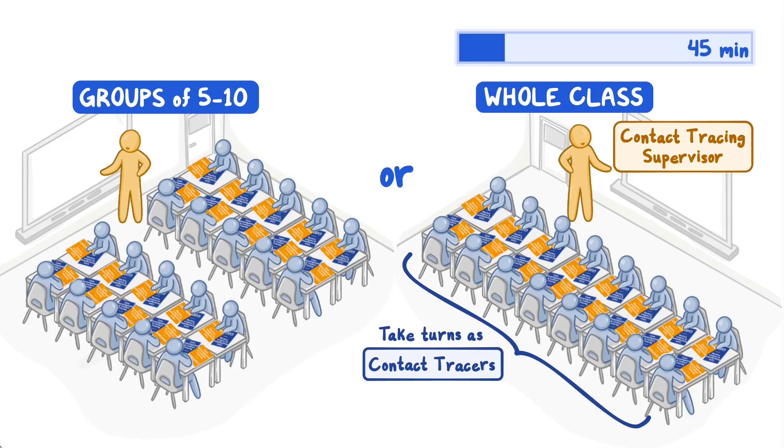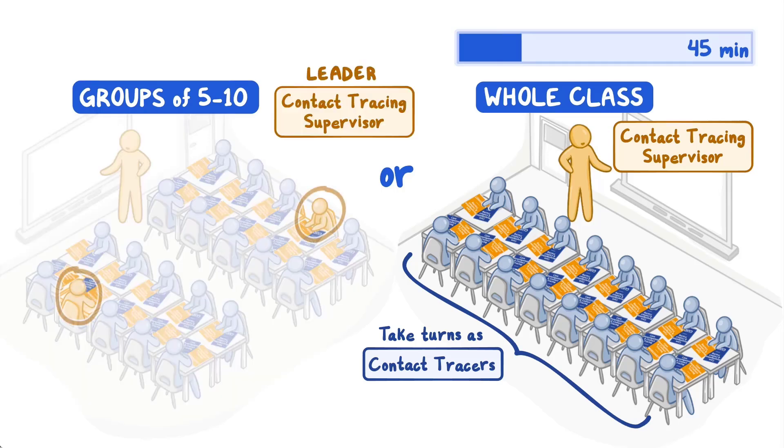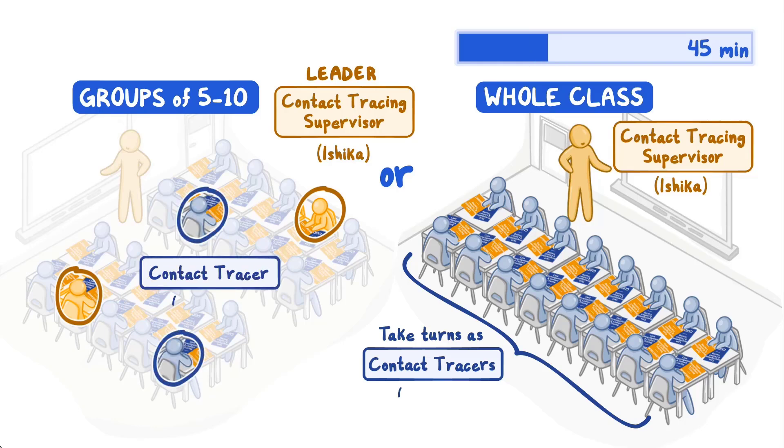If in groups, choose a leader in each group to be the contact tracing supervisor. Both the contact tracing supervisor, named Ishika in the roleplay, and the contact tracer, named William, have significant roles in the activity, so make this role choice wisely. The remaining students will choose a character from the other character cards.